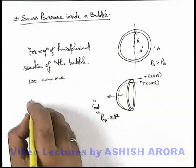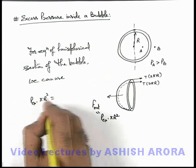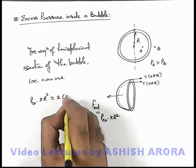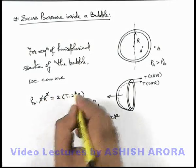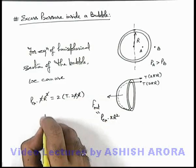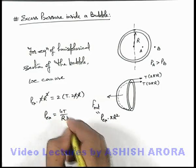In this situation it is excess pressure multiplied by πr², that is outward force, must be balanced by twice of T into 2πr. In this situation π and r gets cancelled out, and excess pressure can be written as 4T/R.